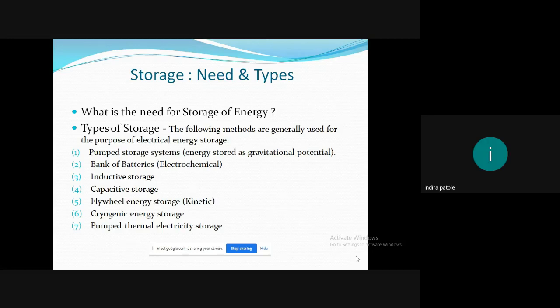Now, as you can see, the second point says the types of storage system. So these types were designed as per the need and the type of grid, keeping in mind the commercial as well as the economical point of view. So these are the storage types: pumped storage system, battery banks which is electrochemical storage, inductive storage, capacitive storage, flywheel energy storage which is in form of kinetic energy, the cryogenic energy storage, pumped thermal electricity storage.